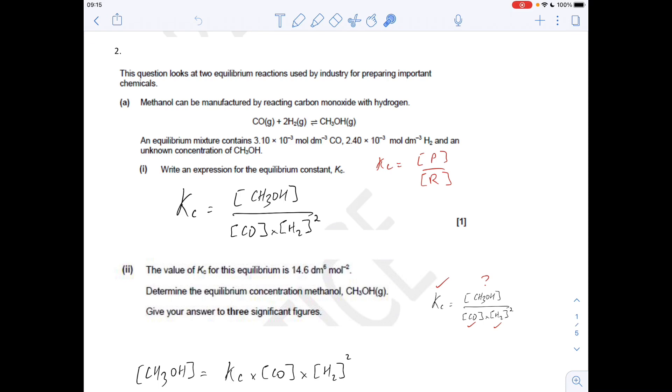Okay, so question two, we've got to write the Kc expression for this equilibrium here. Just a reminder that it's the equilibrium concentration of the products over the reactants. So our product is methanol, so it goes on the top in square brackets, divided by the equilibrium concentration of CO, multiplied by the equilibrium concentration of hydrogen squared because it's been balanced with a two.